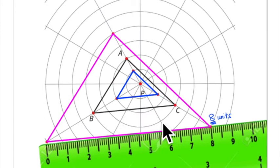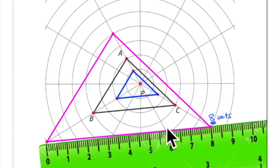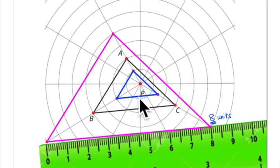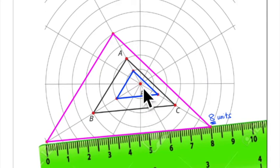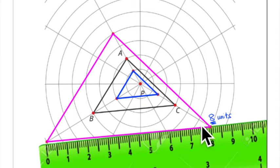If you compare the scales from the smallest triangle to the largest triangle, it's a scale factor of four times — a four-fold increase. This is because the blue triangle gets multiplied by one-half and the black triangle gets multiplied by two. Going from the blue to the black is a scale factor of two, and then the black to the pink triangle is another scale factor of two, for a total scale factor of four.